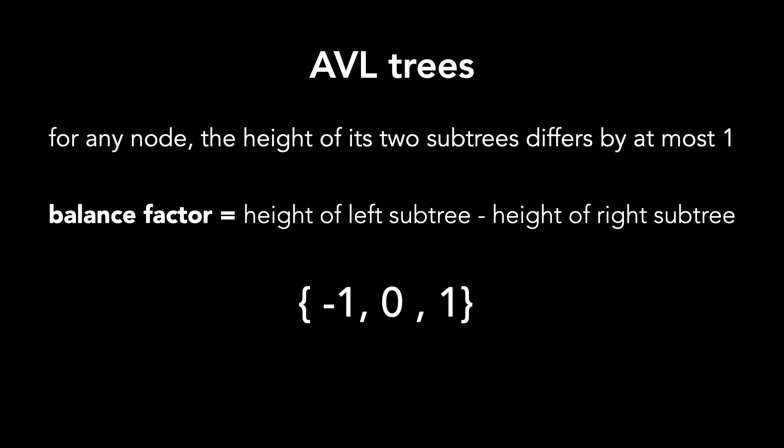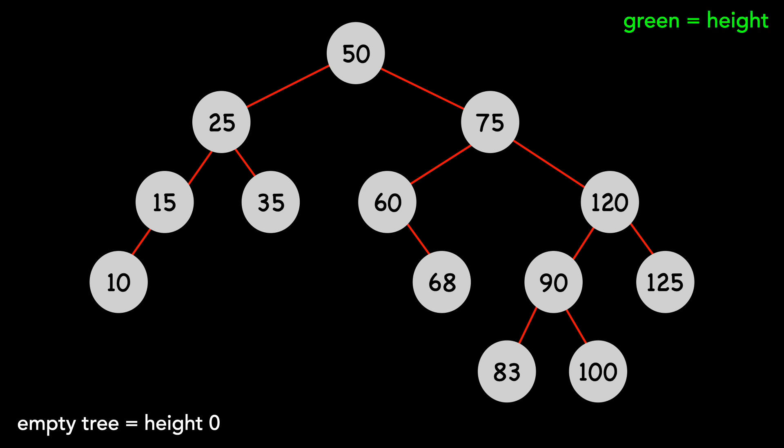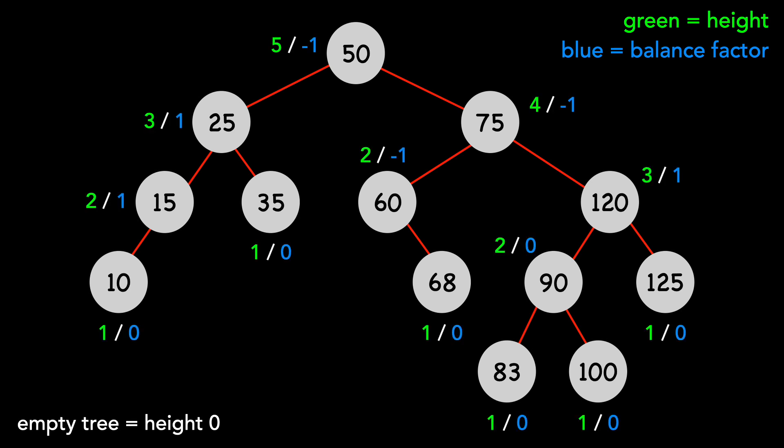Let's take a look at an AVL tree. Note that we'll say an empty tree has a height of zero, so leaf nodes have a height of one. I'll put the height of each node in green and the balance factor of each node next to the height in blue. Remember that balance factor is calculated by taking the height of the left subtree minus the height of the right subtree.